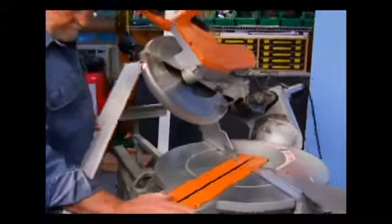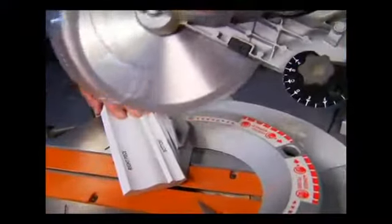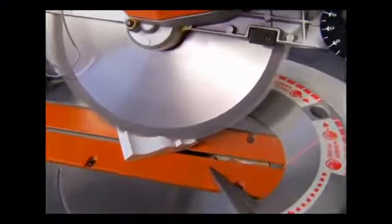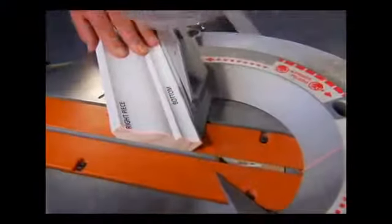To cut the right hand section, swing the saw to the left. Place the workpiece to the left of the blade with the bottom against the fence.